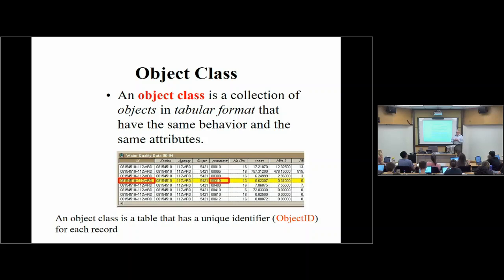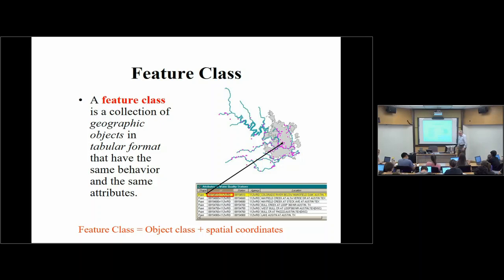An object class is a set of objects in tabular format that have the same behavior and attributes. In this instance, this class is a set of values for water quality criteria — parameters like biochemical oxygen demand, bacterial content, oxygen. A feature class is a set of geographic objects in tabular format with the same attributes, plus an additional field called 'shape' that tells you where the values are spatially. A feature class is an object class with one more field that has shape.